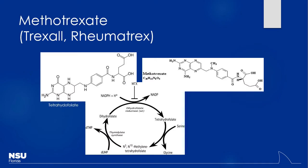By inhibiting dihydrofolate reductase, cells cannot use folic acid, can't produce purines, can't make new DNA. Remember the term for methotrexate — anti-metabolite. This is interrupting this process — we talked about 5-FU as another anti-metabolite, as well as azathioprine and 6-mercaptopurine — all of those are considered anti-metabolites because they interrupt the ability for that cell to make new DNA.